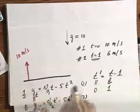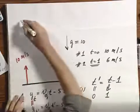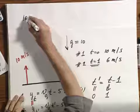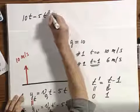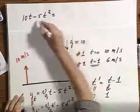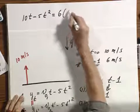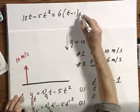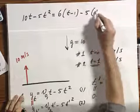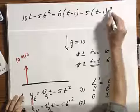Because now, I work out this for object number one. So I get ten times t minus five t squared, that's for object number one, equals six times t minus one, which is for object number two, minus five times t minus one squared.